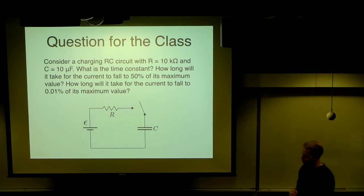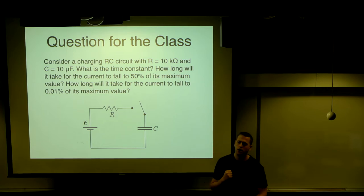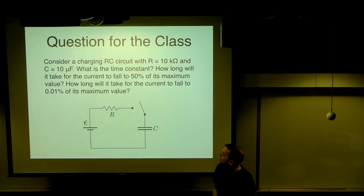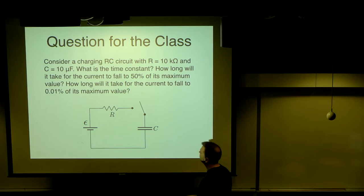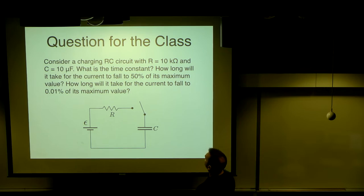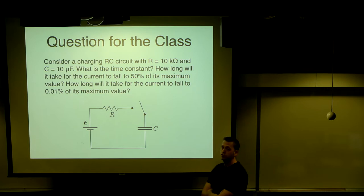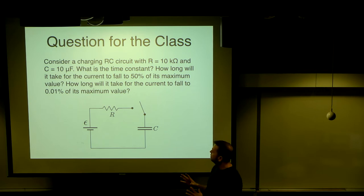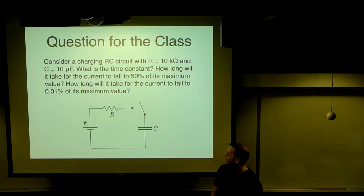Practice problem: a charging RC circuit with R = 10 kΩ and C = 10 μF. First, find the time constant. Second, how long does it take for current to fall to 50% of its maximum? Third, how long does it take to fall to 0.01% of maximum? For parts two and three, you're solving for time t in the current equation. Pause and try this out.